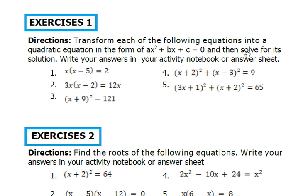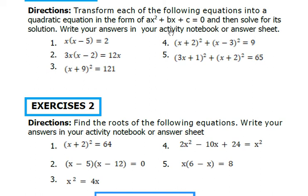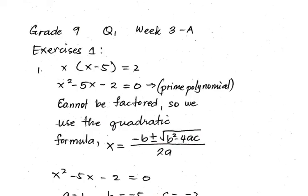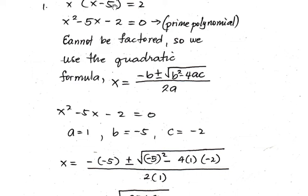Let's proceed with exercise 1. There are 5 numbers. We have to transform each into quadratic equation form and solve for the values of x that satisfy the equation. For number 1, x times quantity x minus 5 equals 2. Transposing the constant 2 to the left-hand side gives us x squared minus 5x minus 2 equals 0. We cannot factor this — it is a prime polynomial — so we end up using the quadratic formula.